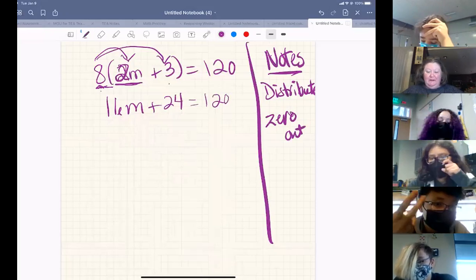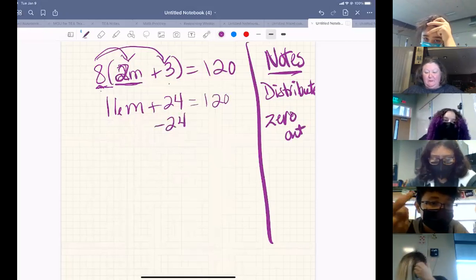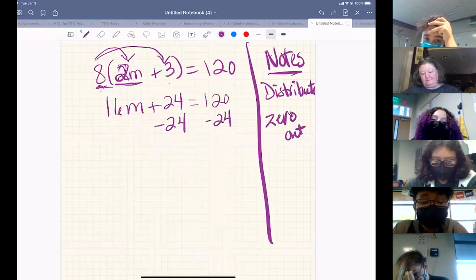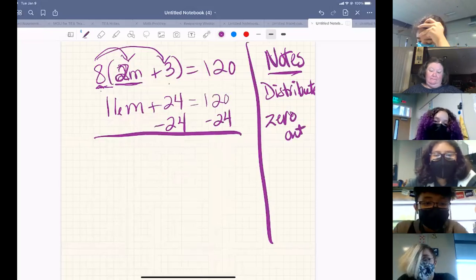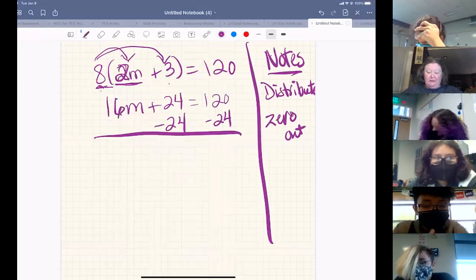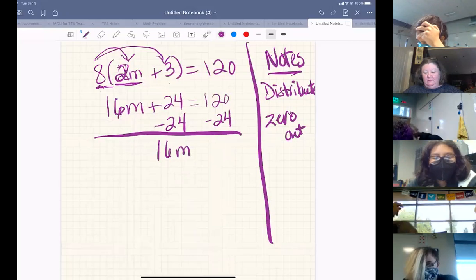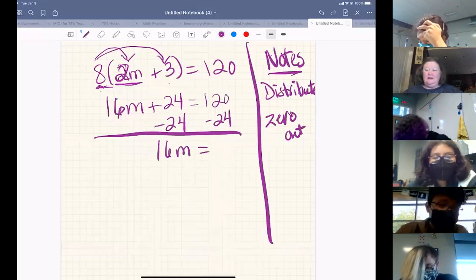Yeah, thanks Jeremy. We are going to subtract the 24 from both sides. The 16M is going to drop straight down and stay on the left side of the equal sign for now.